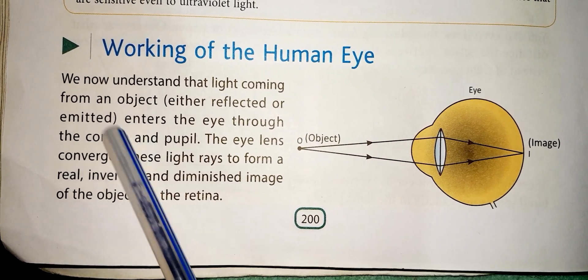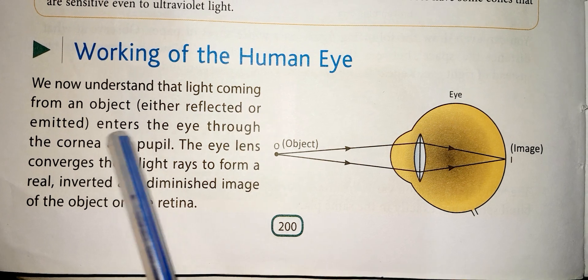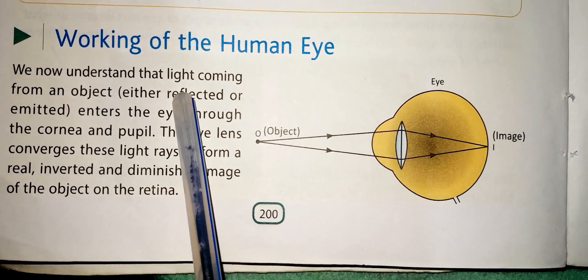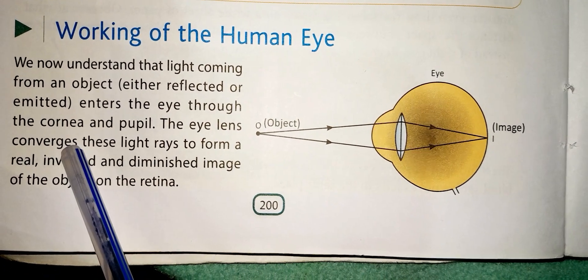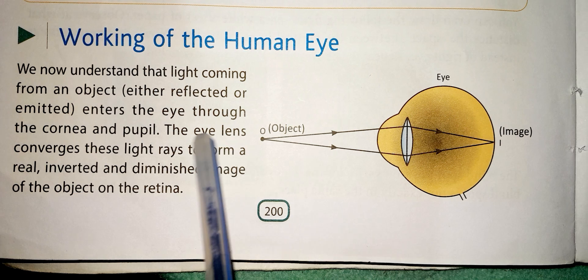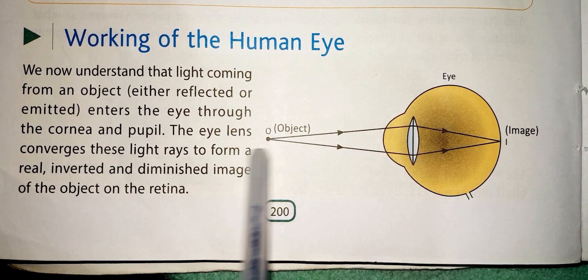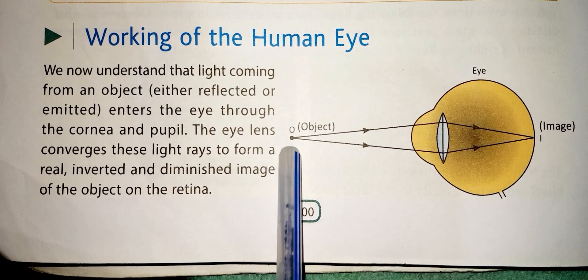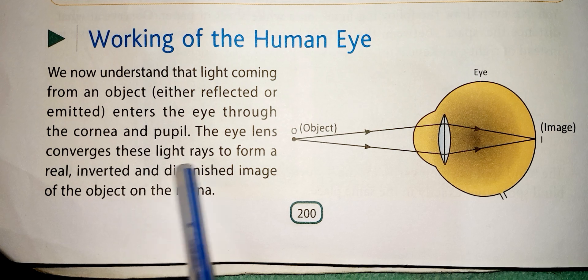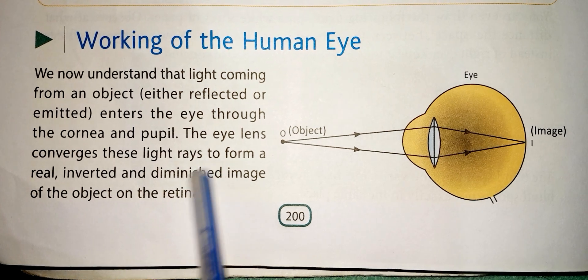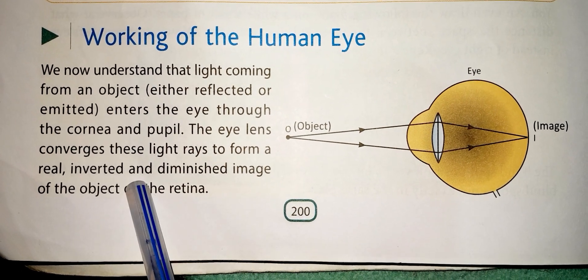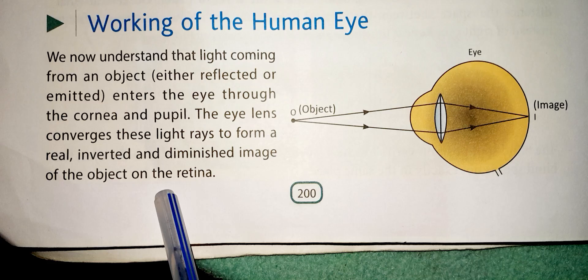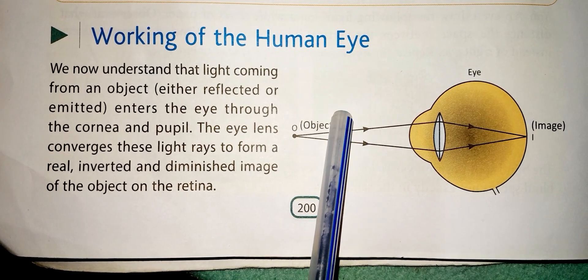Light coming from an object, either reflected or emitted, enters the eye through the cornea and the pupil. The eye's lens converts these light rays to form a real, inverted, and diminished image of the object on the retina.